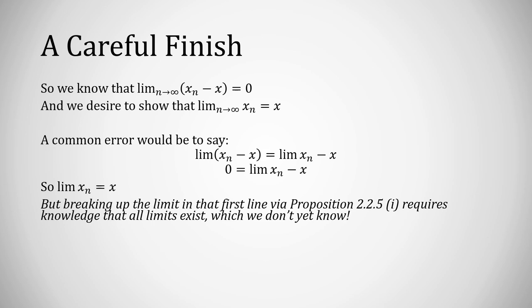But breaking up the limit of the difference into a difference, that first line there, that's using proposition 2.2.5 part 1, requires knowing that all the individual limits exist, and we don't know that the limit of xn exists yet. That's what we are trying to prove. So we cannot distribute the limit across the difference because we don't know that the limit of xn even exists yet.